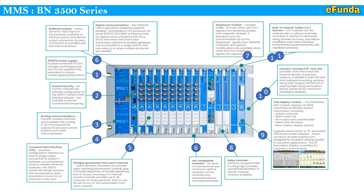Ninth — VGA display: the 3500 9.4-inch VGA module displays all 3500 machinery protection system information, including system event list, alarm event list, all module and channel data, alarms, and OK status.